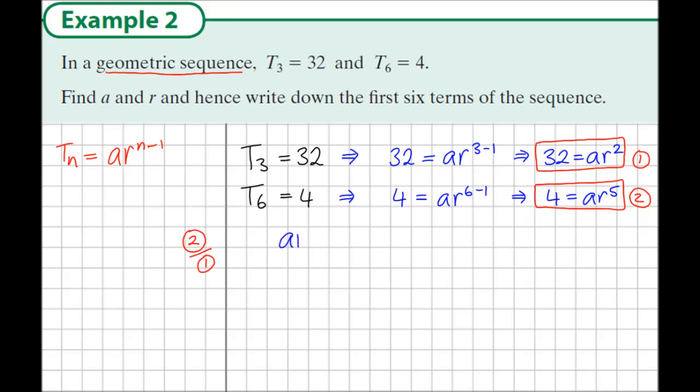If we do this, the a's will eliminate and give us just an equation in r. So let's write equation 2 on top, and below this we're dividing by equation 1. When we do this, a divides into a once, and r² divides into r^5 r³ times.